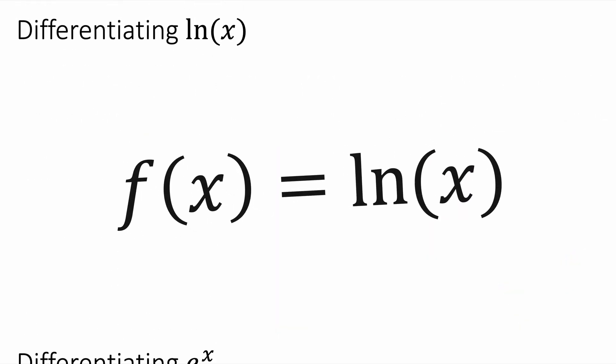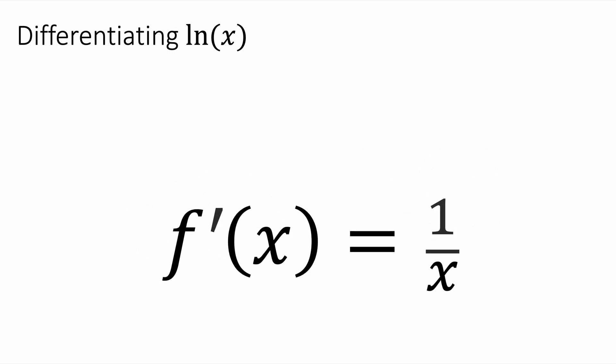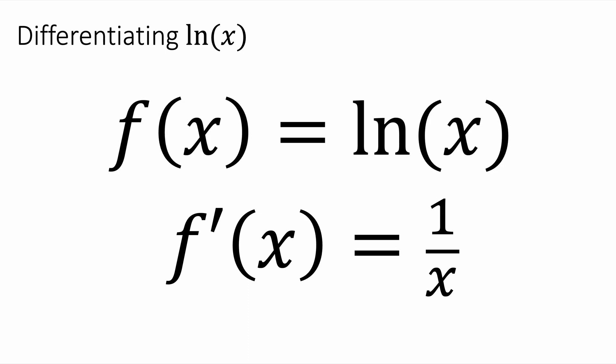Now let's look at differentiating logarithms. f of x equals ln of x. And this is a natural logarithm to the base e. This differentiates to be 1 over x. So clearly the logarithm, the ln of e, is a very special logarithm because it's the only one that differentiates to be 1 over x.